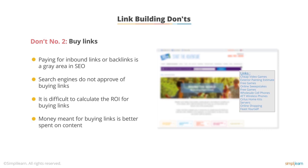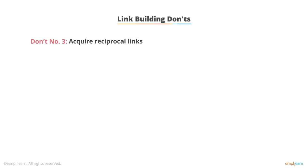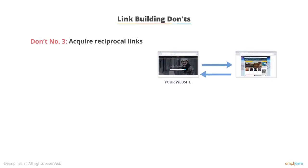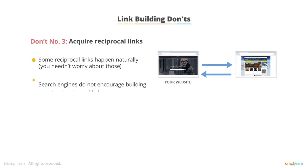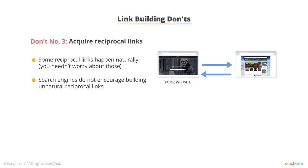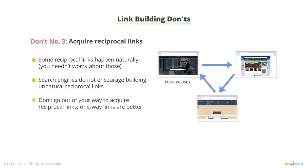The last don't is acquiring reciprocal links — links that go in a circle, where you link to somebody and they link directly back to you. On the natural web with no manipulation, that happens all the time, so don't be afraid of it occurring naturally. One news site will regularly link to another and that article might link back. But don't go out of your way to build all your links reciprocally, or over-engineer it with three-way linking schemes. Reciprocal links are generally not as good as one-way links, but it's not worth your time or investment trying to avoid them entirely.